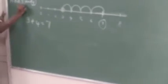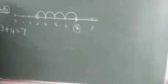Once again: I have to add 3 and 4. I mark the point at 3 and make 4 jumps — first jump, second jump, third jump, fourth jump — and I get 7. So when I add 3 and 4, the answer is 7.